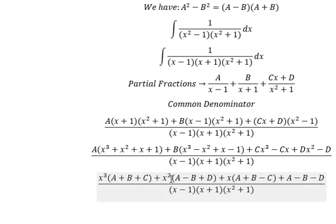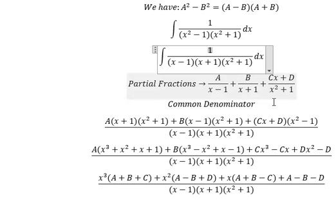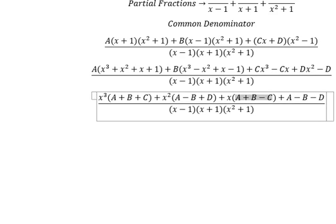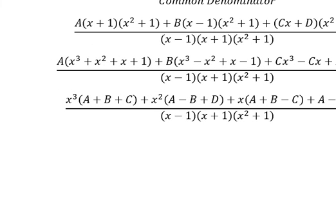So we compare coefficients. We just have only number 1, so A minus B minus D equals to number 1. We don't have x to the power of 3 as well as x, so this one, this one, and this one equals to number 0. And now, we have the system of equations.